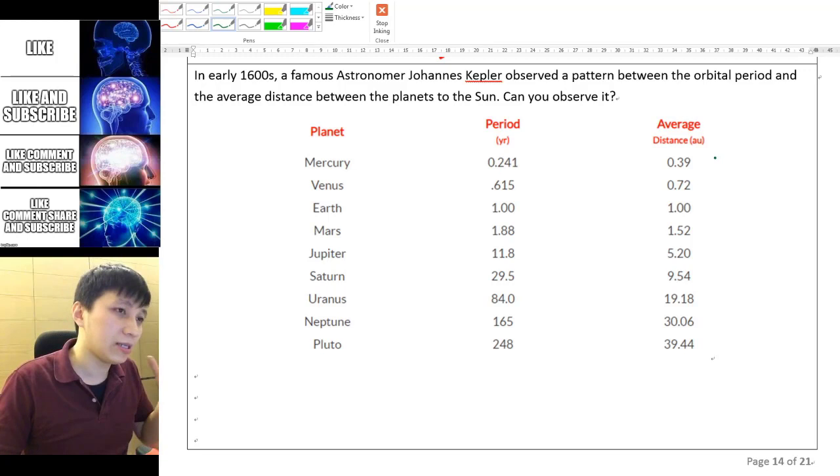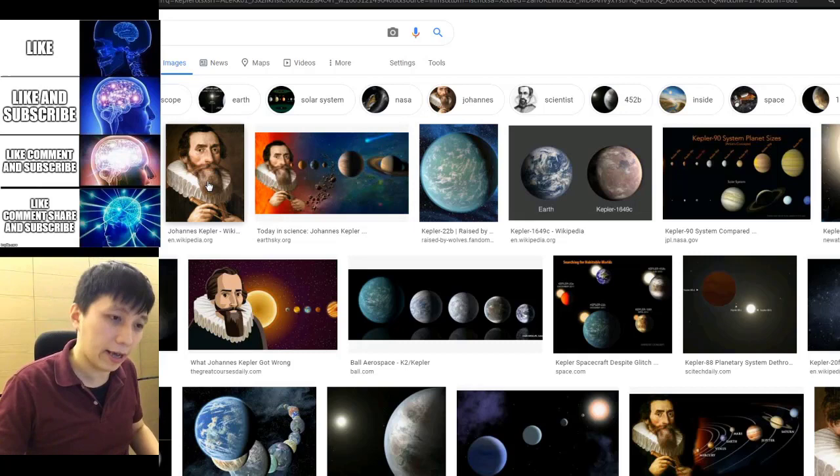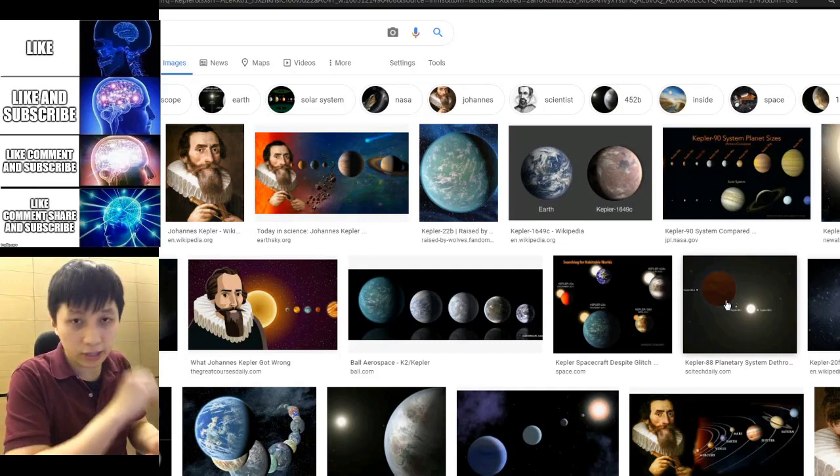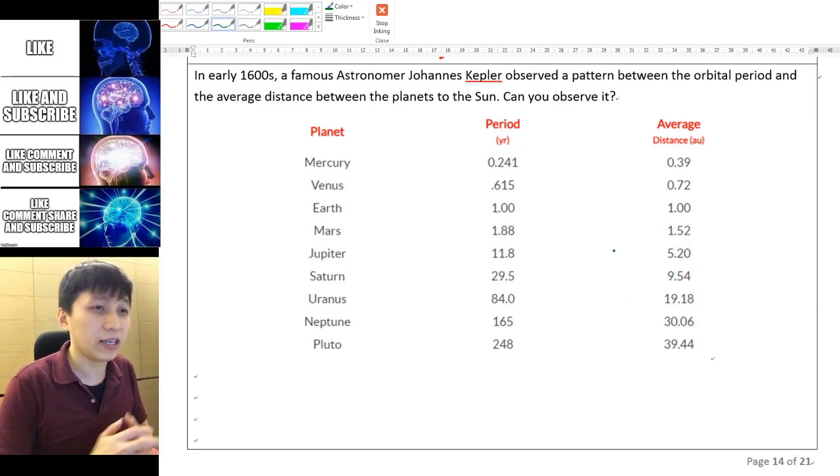So this is actually the number that was observed by a very famous astronomer, as we mentioned earlier, Kepler. And he took a really long time to use simply a telescope to write down lots of data, and eventually he obtained some data like this and then he actually found out there's a pattern between these two sets of data.